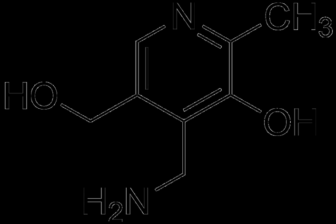PLP is a required coenzyme of glycogen phosphorylase, the enzyme necessary for glycogenolysis to occur. PLP can also catalyze transamination reactions that are essential for providing amino acids as a substrate for gluconeogenesis.